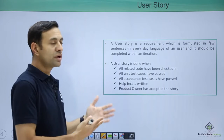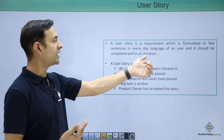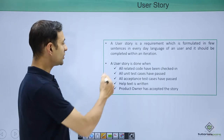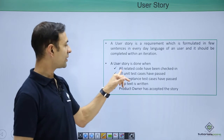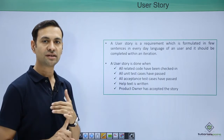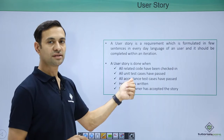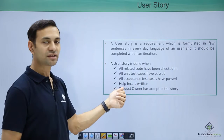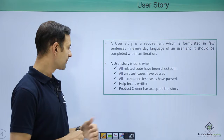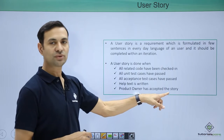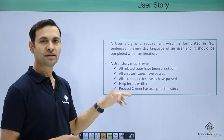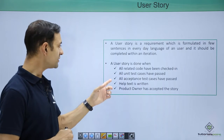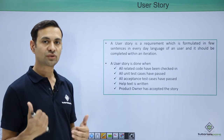So what is done all about? A user story is a requirement formulated in the everyday language of a user, and it should be completed with an annotation. The definition of done for a user story is when all relevant code has been checked in, all unit test cases have passed, all acceptance test cases have passed, help text like release notes is written, and the product owner has accepted the user story.